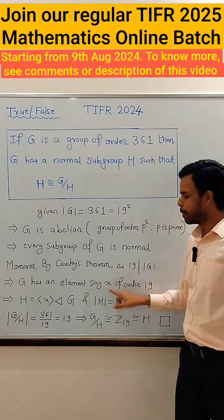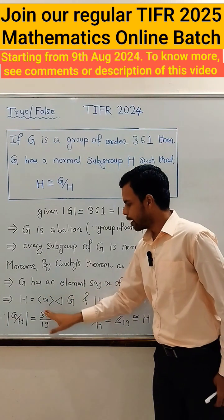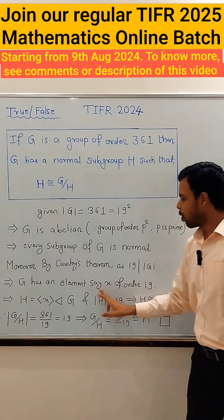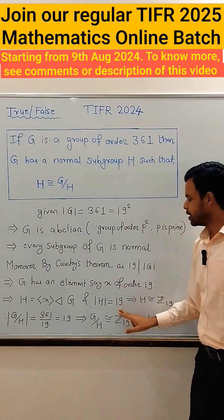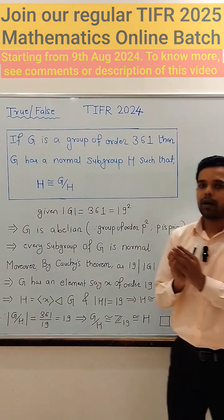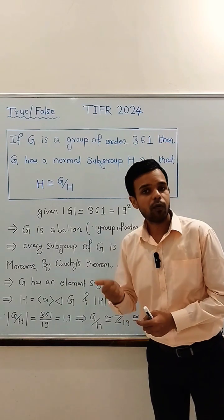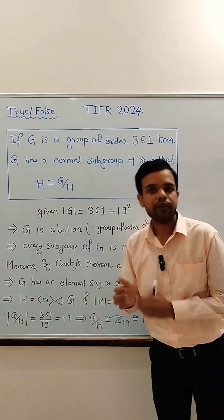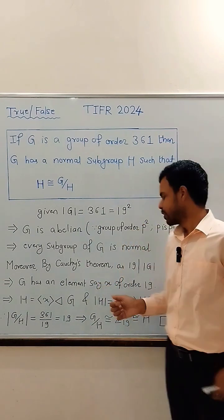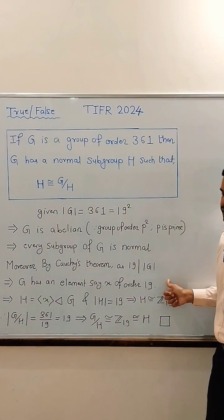Denote that element by X. So the subgroup generated by X, that is H, is normal in G and the order of H is 19. We know that up to isomorphism there is only one group of order 19, which is Z₁₉. So H is isomorphic to Z₁₉.